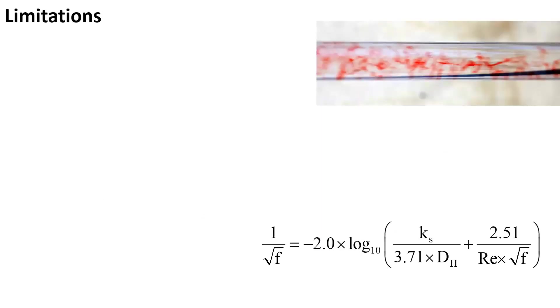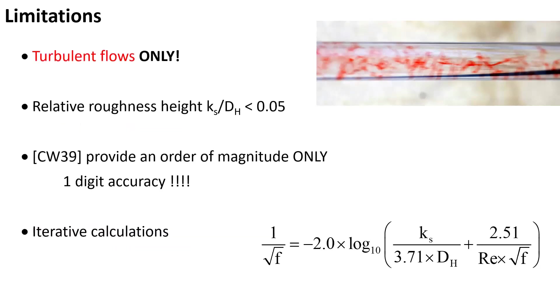The limitations of the Colebrook-White formula: first of all, we are dealing with turbulent flow only, with relative roughness height less than 5%. The Colebrook-White formula provides an order of magnitude only, typically one digit accuracy, and it is an iterative calculation as the Darcy-Weisbach friction factor appears on both the left and right hand side of the equation.